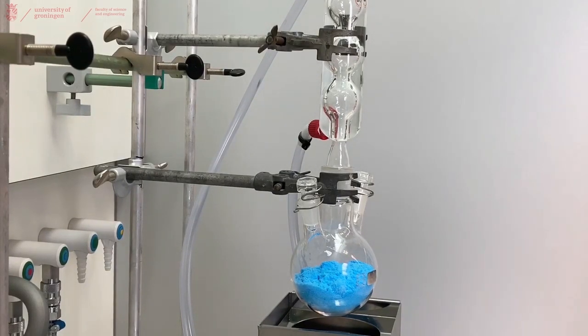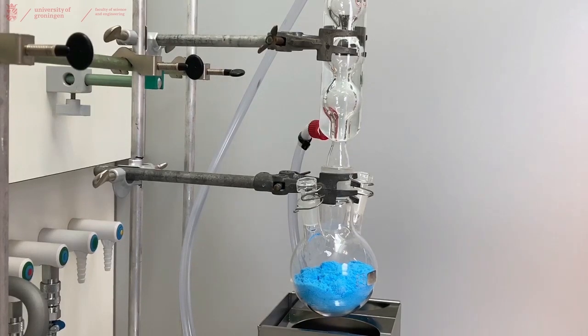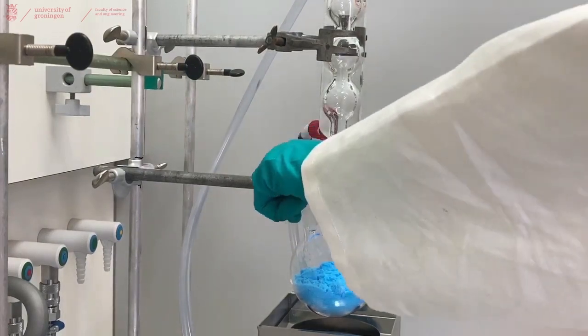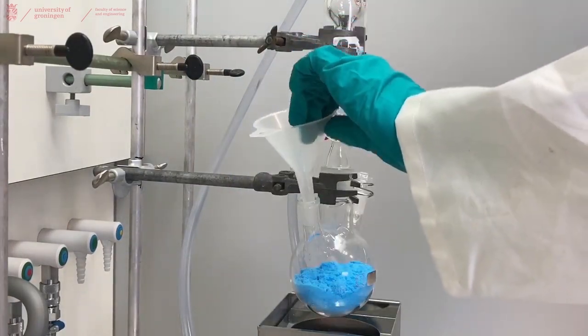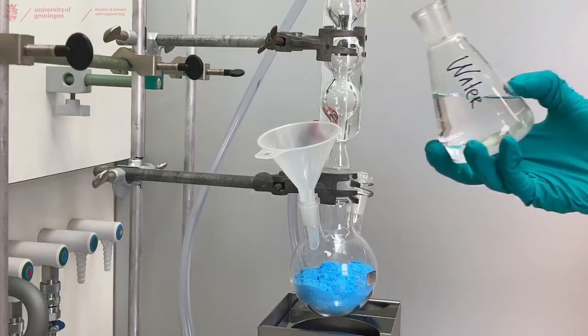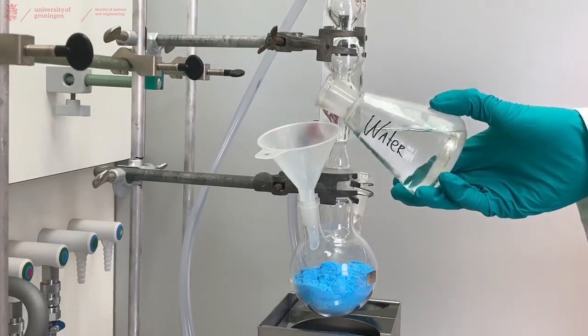So, for this recrystallization I will add my solvent, in this case water, using one of the two side necks. So I'm going to open it by removing the stopper. Now that the funnel is placed on the three-neck flask, I can roughly add 60 ml of water to this copper sulfate and start heating it and see if everything dissolves or not.